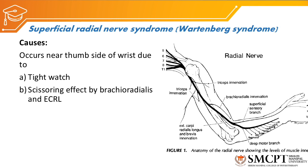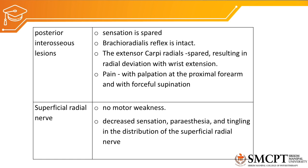Superficial radial nerve syndrome, also called Wartenberg syndrome, occurs near the thumb side of the wrist due to a scissoring effect between brachioradialis and extensor carpi radialis longus. In posterior interosseous lesion there is motor involvement but no sensory involvement, the brachioradialis reflex is intact, and extensor carpi radialis is spared. In contrast, superficial radial nerve injury presents with no motor involvement but with decreased sensation, paresthesia, and tingling in the distribution of the superficial radial nerve.